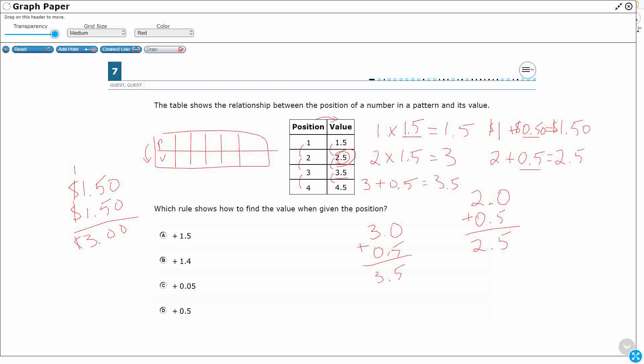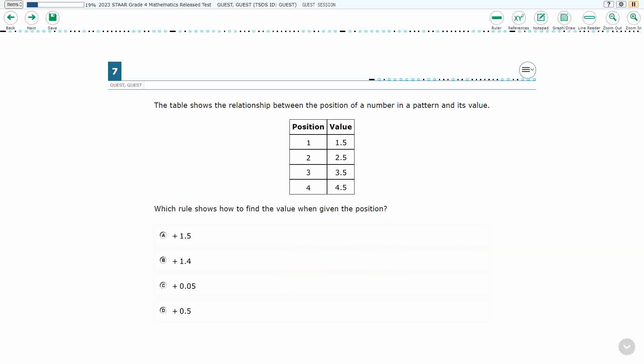And let's see if we can do the same thing with the 4. 4.0. Add to the 0.5. Yes, that gives me my 3.5 and my 4.5 like I'm wanting. So I added 5 tenths. So my answer here is D.